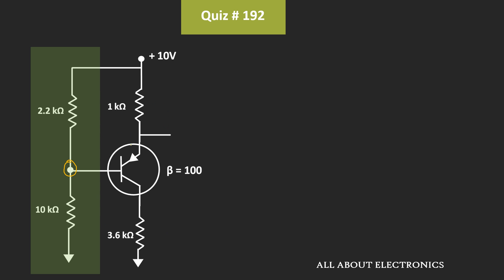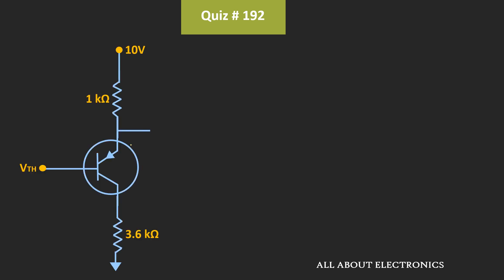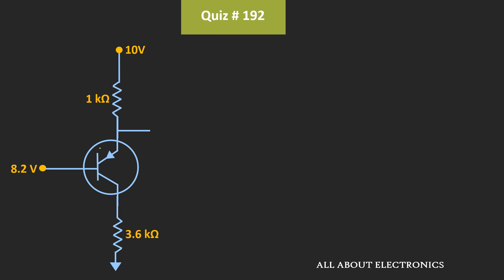In the approximate analysis, we apply the voltage divider rule for the resistors and find the voltage at the base node, neglecting the remaining circuitry. Under this approximate analysis, the Thevenin's equivalent voltage, or base voltage Vb, is equal to 8.2 V. Since the emitter-base junction is forward-biased, VEB = 0.7 V, meaning VE − Vb = 0.7 V. Therefore, VE = Vb + 0.7 V = 8.2 V + 0.7 V = 8.9 V.